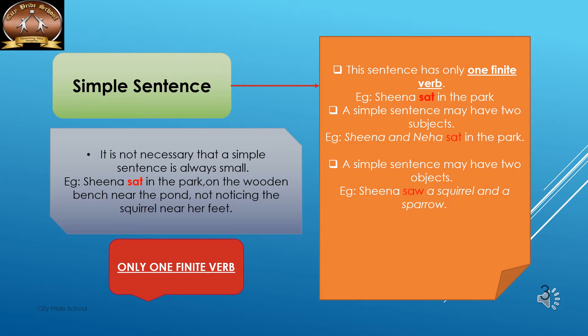'Sheena sat in the park' — the verb 'sat' can be changed according to the subject. When the number of people in the subject changes, the verb also changes accordingly — like 'he sits in the park,' 'she sat in the park,' 'I sit in the park.'